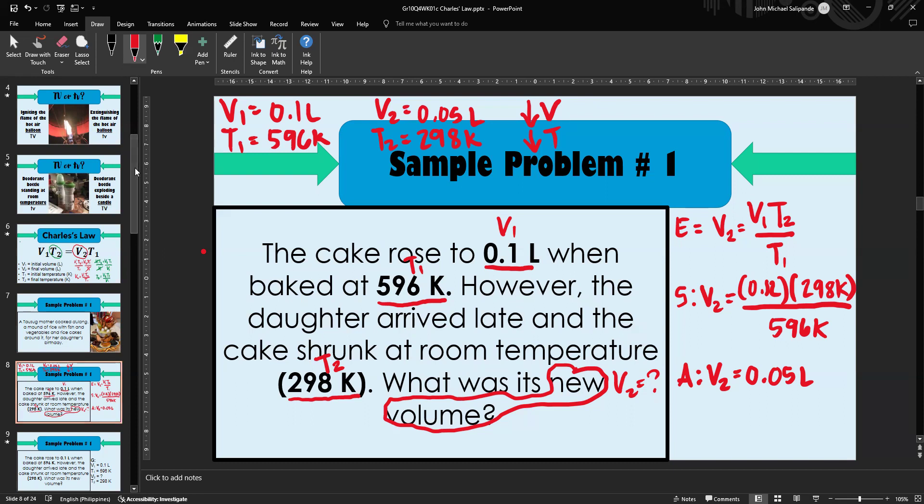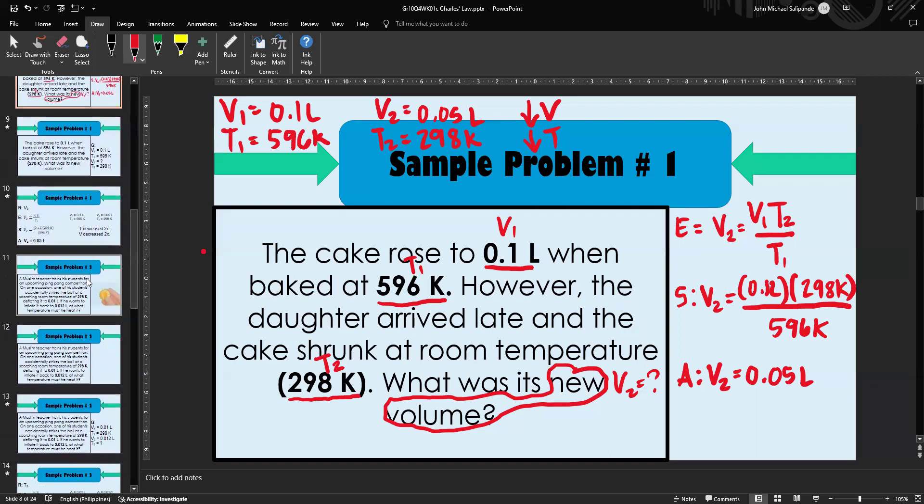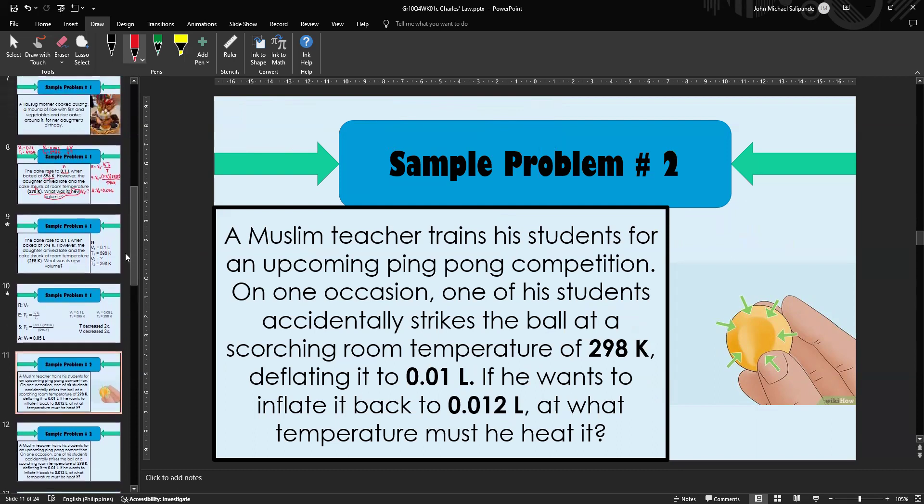Sample problem number two: A Muslim teacher trains his students for an upcoming ping pong competition. One student accidentally strikes the ball at a scorching room temperature of 298 Kelvin, deflating it to 0.01 liter. If he wants to inflate it back to 0.012 liters, at what temperature must he heat it? If you have no idea, every time there's a deflated ping pong ball, PE coaches or ping pong coaches just boil the deflated ball until it returns to its original shape.